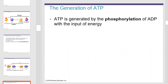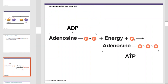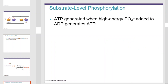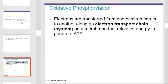ATP is generated by the phosphorylation of ADP with the input of energy. Substrate level phosphorylation generates ATP when high-energy phosphates are added to ADP using enzymatically-driven reactions only. Oxidative phosphorylation occurs when electrons are transferred from one electron carrier to another in an electron transport chain, creating a chemoosmotic gradient. The chemoosmotic gradient subsequently produces ATP.